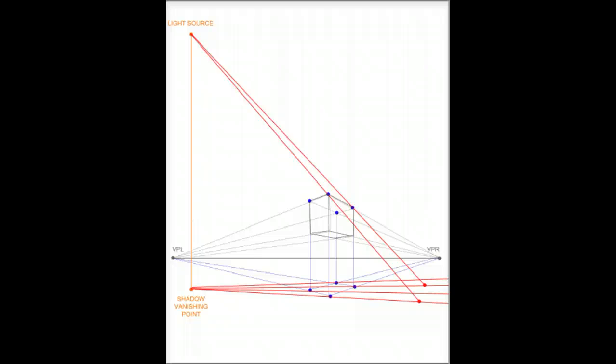Then I'll do another guideline from the light source that goes through this back corner on the top. And it will intersect from the shadow vanishing point guideline that goes through the back bottom corner. And we'll have a dot that marks that location right here. And then finally, we'll go from the light source, a guideline through that left upper corner. And it will intersect with the guideline that comes from the shadow vanishing point through that left bottom corner.